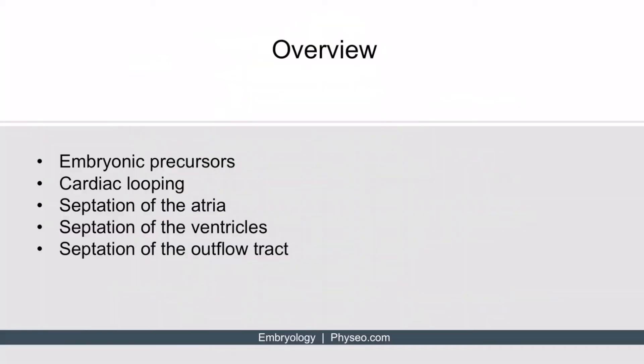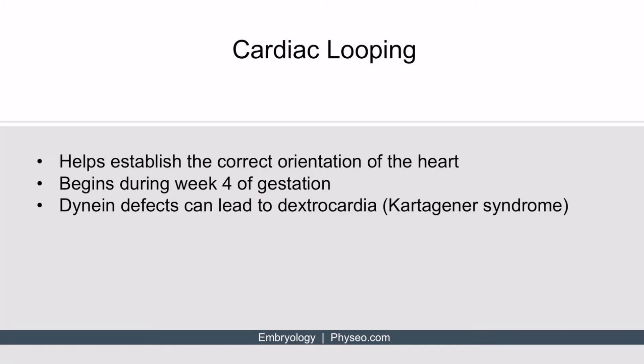So far, we've discussed embryonic precursors. Now let's move on to discuss cardiac looping. The heart undergoes some pretty intricate looping throughout development. The folding or looping process helps the heart establish the correct orientation, with the heart positioned from the right to the left within the thorax. This looping process begins during week four of gestation and requires dynein to work properly. Therefore, if dynein is defective, this can lead to dextrocardia. The syndrome known to cause this is Kartagener syndrome.